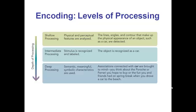When encoding, shallow levels of processing involve thinking about the shapes of things without any meaning attached. Getting a basic recognition of a concept is a bit deeper. Deep processing is really understanding the meaning of things, making associations with what you already know, and thinking about related memories. The deeper you process during encoding, the more likely you are to remember it later on.